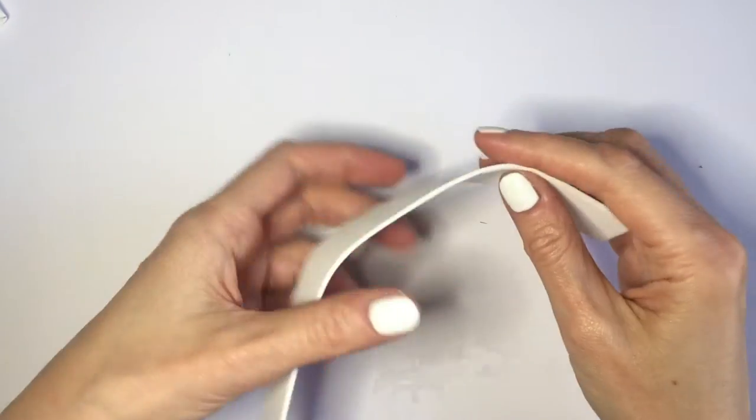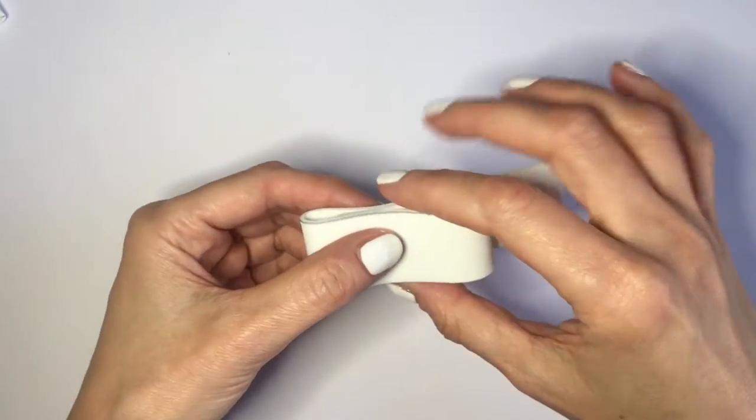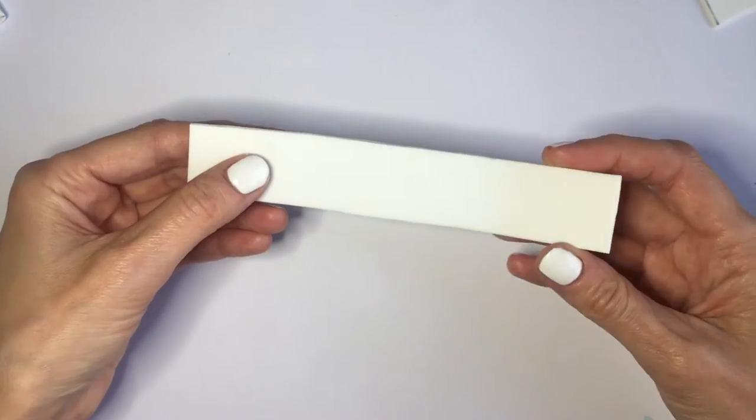Once I have done that, I'm just going to be cutting the excess depending on how big I want my bow. For me, this is it. I didn't measure it, but this is kind of like the size I went for.